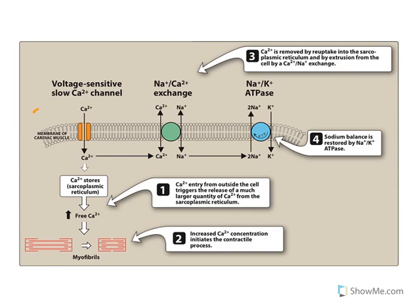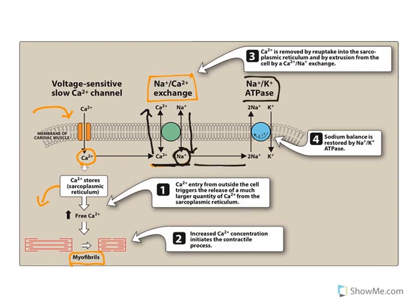Now let us understand the mechanism of action of digitalis glycosides. Normally, the voltage-sensitive calcium channel opens, calcium enters the cell and increases the release of calcium from the sarcoplasmic reticulum, which causes cardiac contraction. After contraction, calcium is removed out of the cell by the sodium-calcium exchanger, which sends calcium outside and brings sodium back into the cell. This excess sodium is then removed by the sodium-potassium pump. The sodium-potassium pump and sodium-calcium exchanger work together.